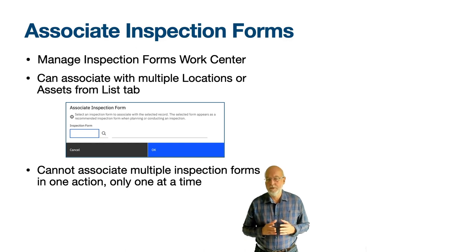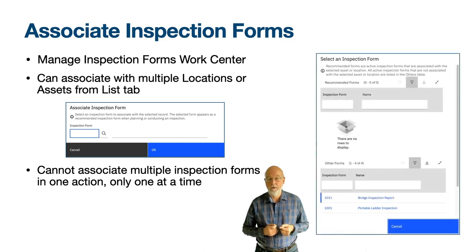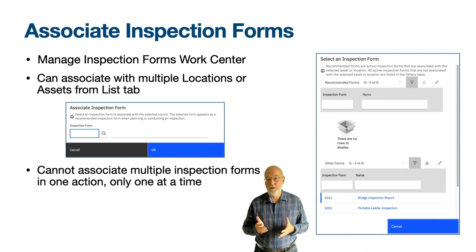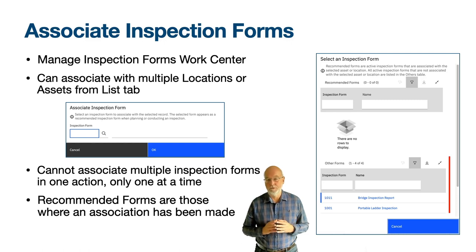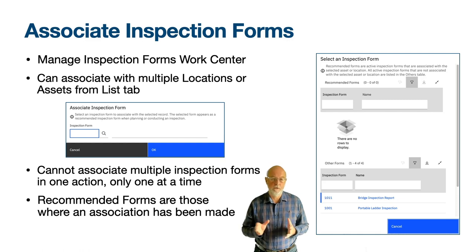The association of inspection forms with locations and assets is used in the routes and work order tracking applications from the select value in the inspection form field. The dialog that opens has two table windows: the top shows the recommended forms — those where an association has been made with the location or asset — and below this is a table window called other forms. In both cases, the associated forms will have a status of active.